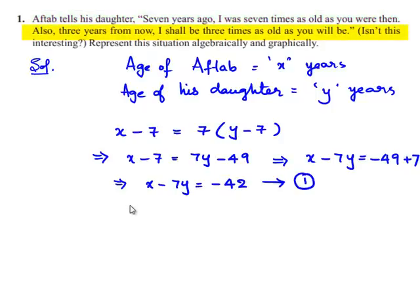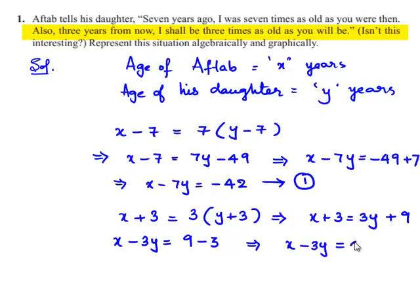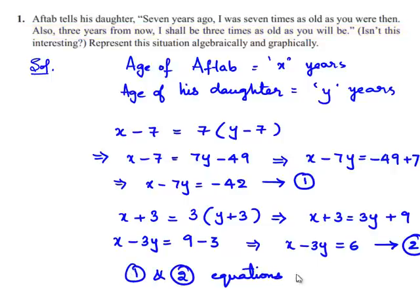By using the second condition, the age of Aftab after 3 years is x plus 3. This is equal to 3 times the age of his daughter after 3 years, which is y plus 3. This implies x plus 3 equals 3y plus 9. So x minus 3y equals 6. Let this be equation number 2. These two equations are the algebraic representation of the given conditions.